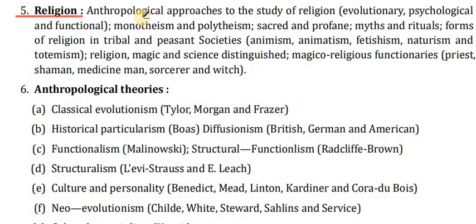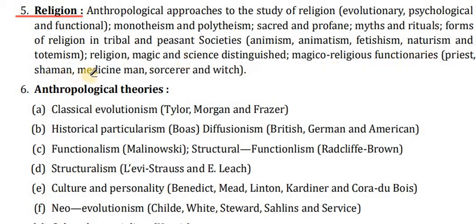Point 5 covers religion with anthropological approaches to the study of religion — evolutionary, psychological and functional. Topics include monotheism, polytheism, sacred and profane, myths and rituals, forms of religion in tribal and agrarian societies: animism, animatism, fetishism, naturism, totemism, magic and science distinguished, and magico-religious functionaries — priests, shamans, medicine men, sorcerers and witches.